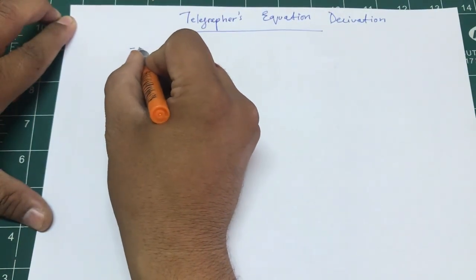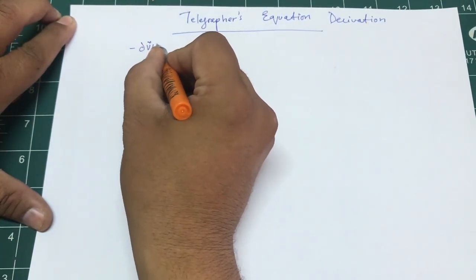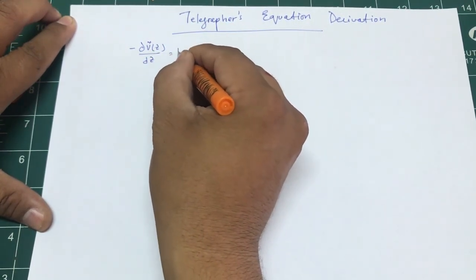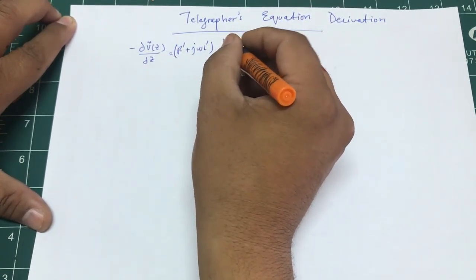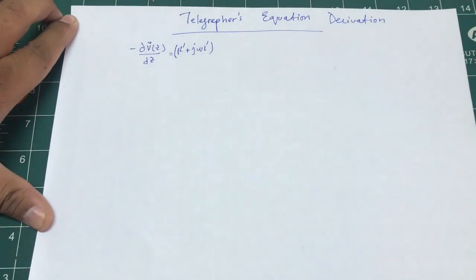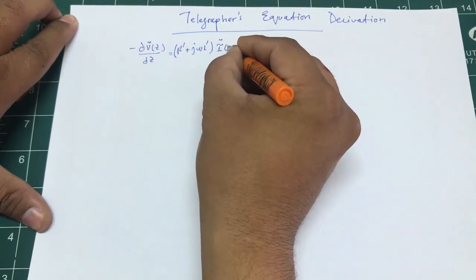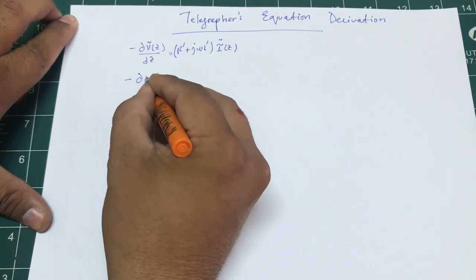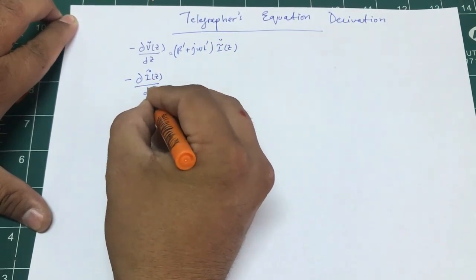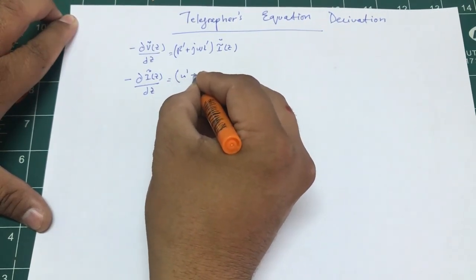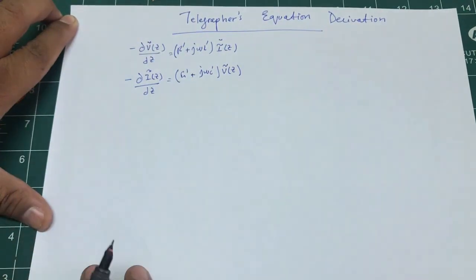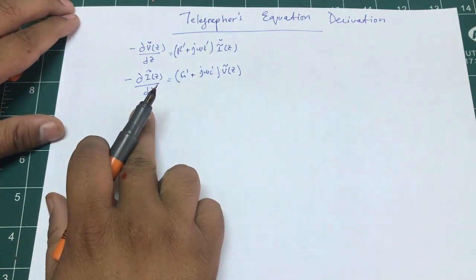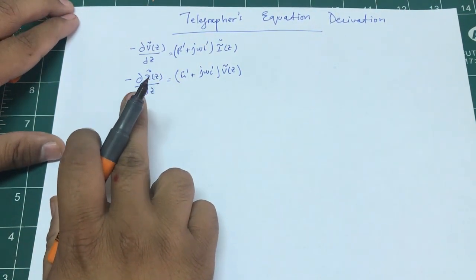Bismillahirrahmanirrahim. Let's continue the second part of our derivation. In my previous video we came up with dV of z — we converted our equation into the form of a phasor: R's prime plus j omega L prime times I of z, and dI of z over dz equals G prime plus j omega C prime times V of z. We end up with these equations using a transmission line model.